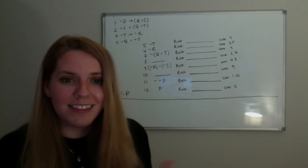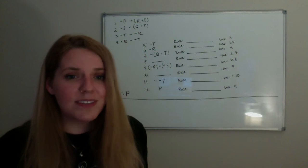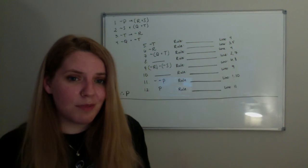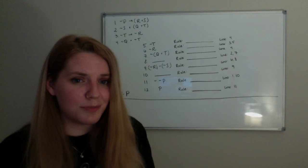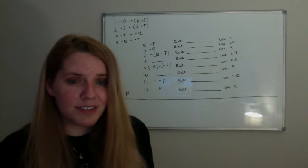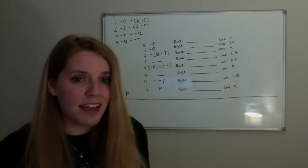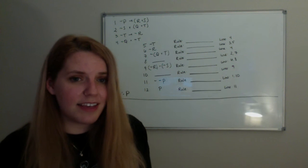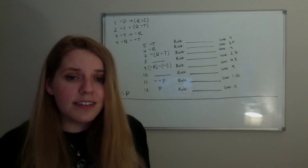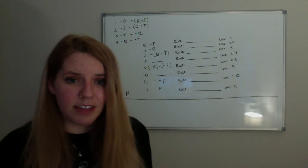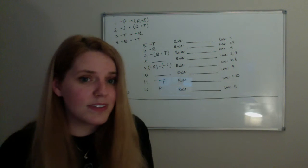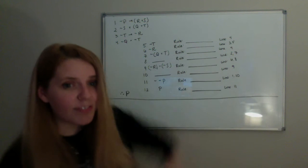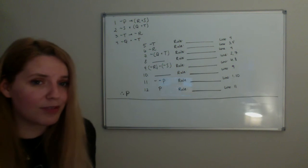We're going to go over the last problem from your homework assignment. This is the longest problem, and it asked the most of you. It asked you to figure out what the claims were that we're deducing, the rules of deduction that we were using, and in one case it asked for the line citation. I've gone ahead and filled in the line citation because I give you that on the exam. On the exam, I'm giving you all of the claims that you can deduce, so all you have to do is give me the rules of deduction.